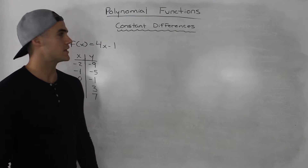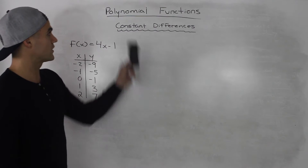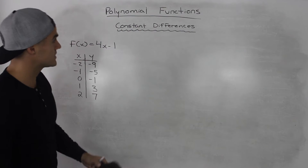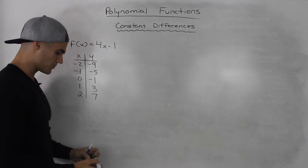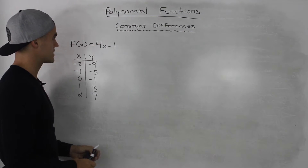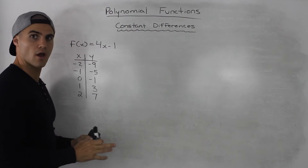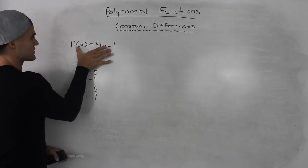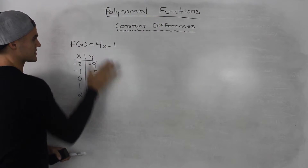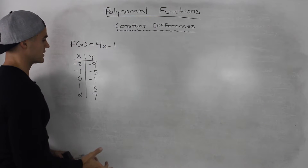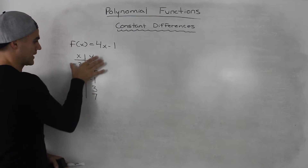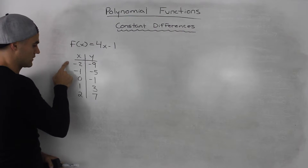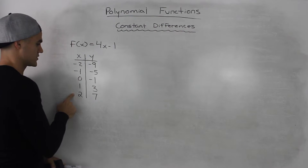Moving on to the next concept in polynomial functions, we're going to talk about constant differences. To talk about constant differences, I'm going to start off with an example. Let's say I have the function f(x) = 4x - 1, and I made a table of values for it from an x value of negative 2 to positive 2.